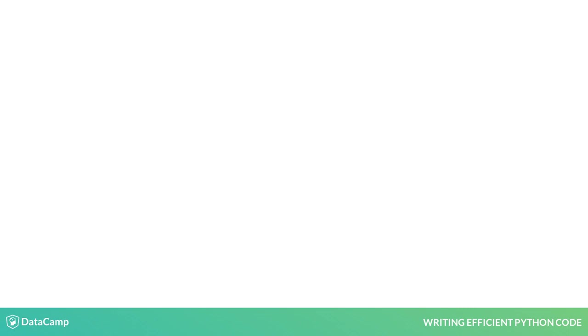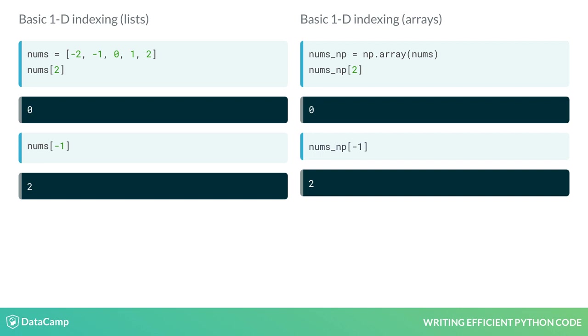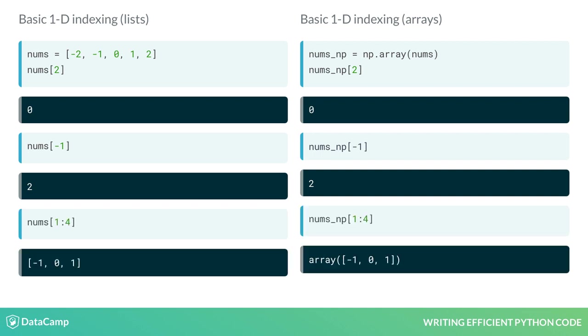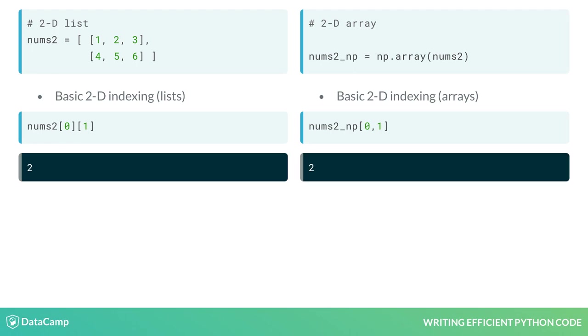Another advantage of NumPy arrays is their indexing capabilities. When comparing basic indexing between a one-dimensional array and list, the capabilities are identical. When using two-dimensional arrays and lists, the advantages of arrays are clear. To return the second item of the first row in our two-dimensional object, the array syntax is nums2_np[0,1].